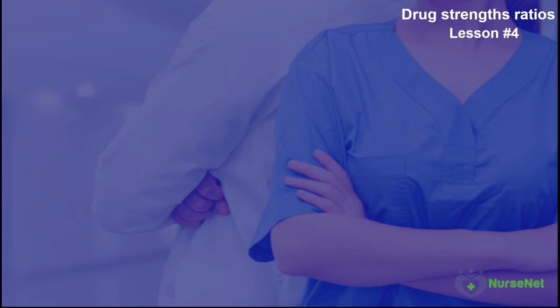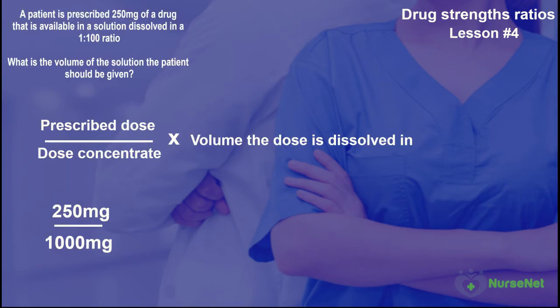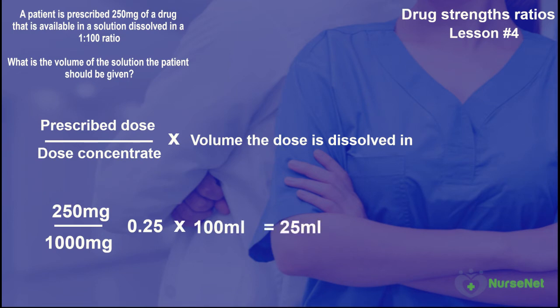Now we can crunch the numbers into our drug calculation formula. Prescribed dose of 250 milligrams divided by the dose concentrate of 1,000 milligrams gives us 0.25. Then 0.25 multiplied by the volume of the solution the drug is dissolved in — 100 milliliters — gives us an answer of 25 milliliters.